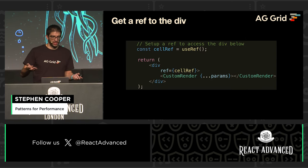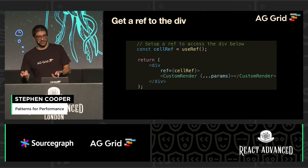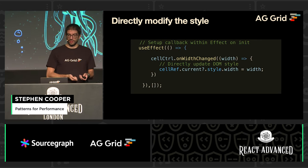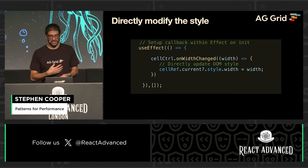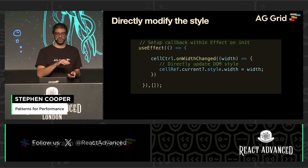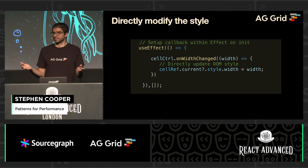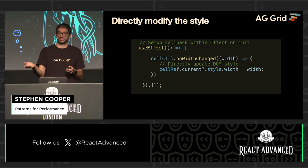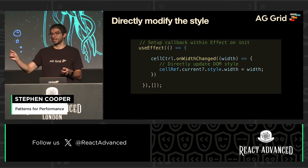How do we get the reference to the div? You can use a ref and set it on the ref, and we know that's going to give us a reference to that DOM element which we can then interact with. Within our callback, we use an effect to set up the on-init, and we directly change the DOM style — we get the cell ref's current value and for that style property we're now changing the width. This is going to have exactly the same impact on our component as what React would eventually do after it had rendered, worked out what had changed, and produced the new output. So we can just skip all of that and surgically change it ourselves.